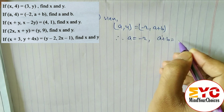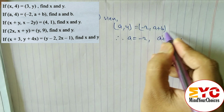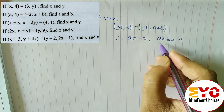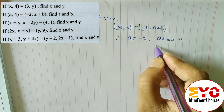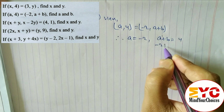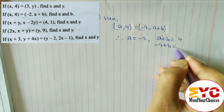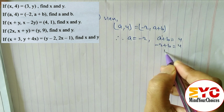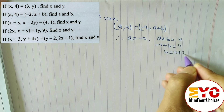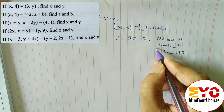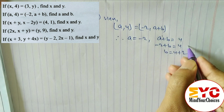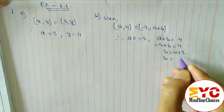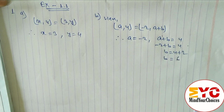Next, from the y component: 4 is equal to a plus b, so a plus b is equal to 4. Putting a equal to minus 2: minus 2 plus b is equal to 4, so b is equal to 4 plus 2, giving b equal to 6.